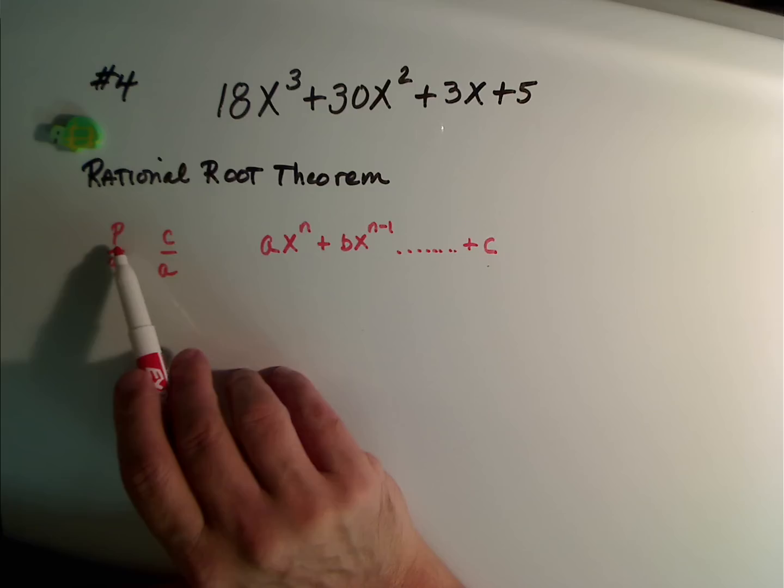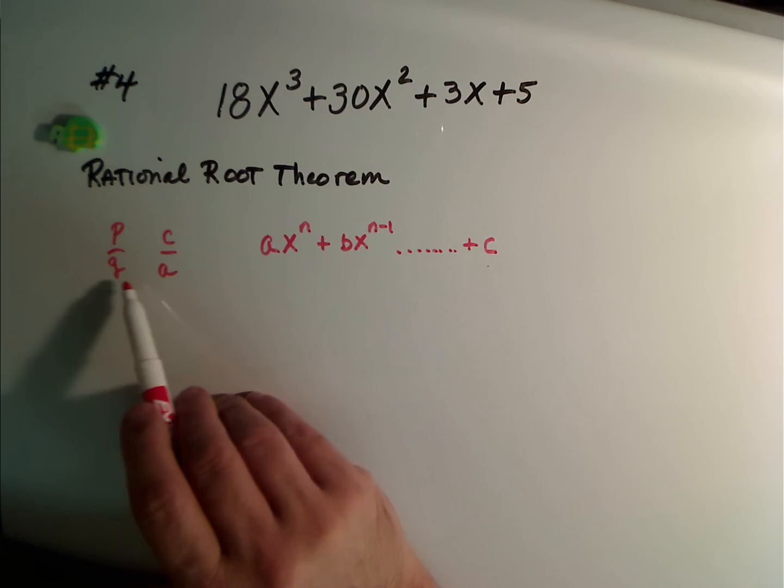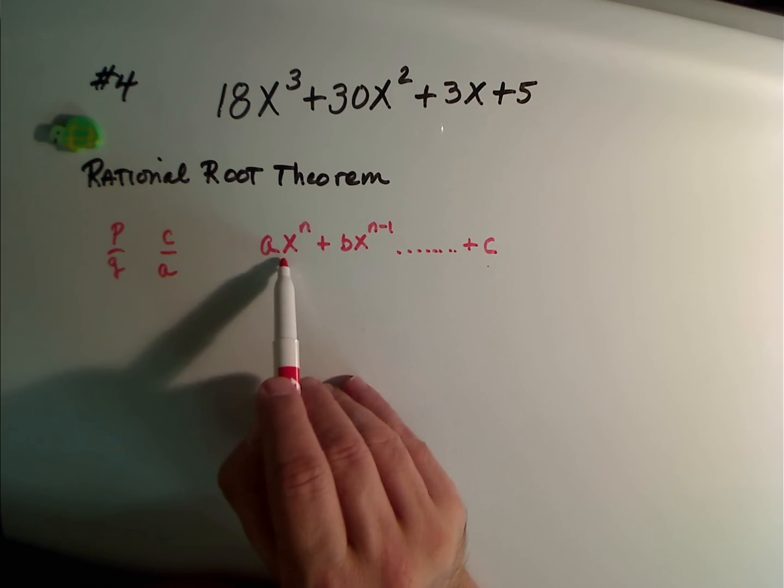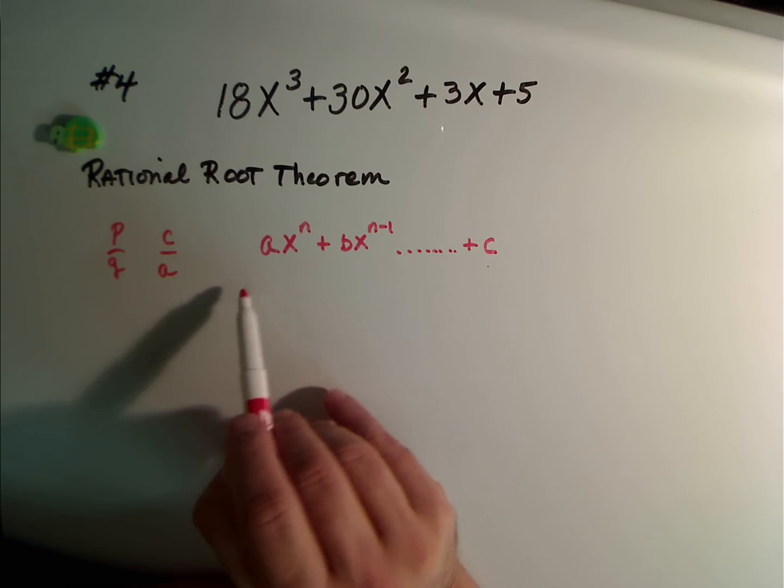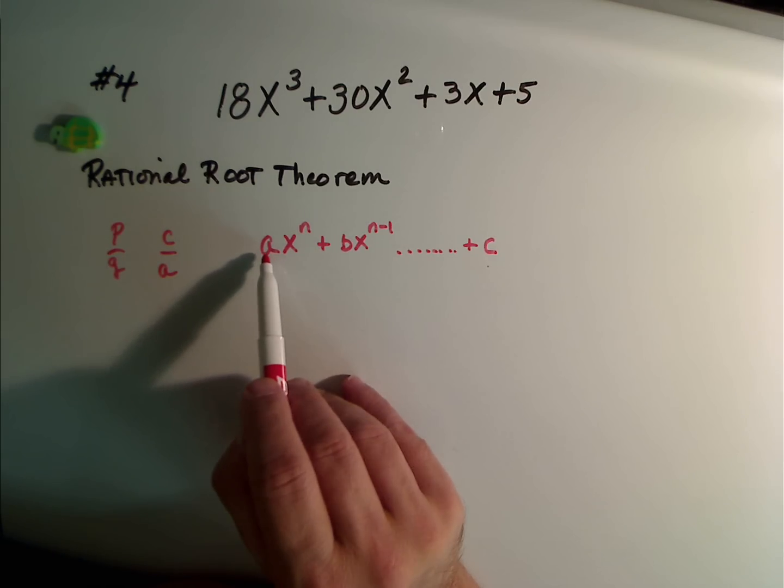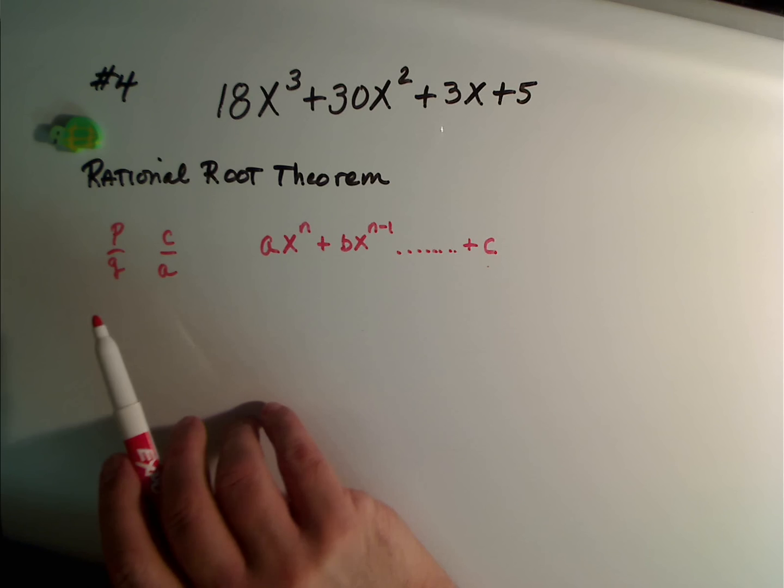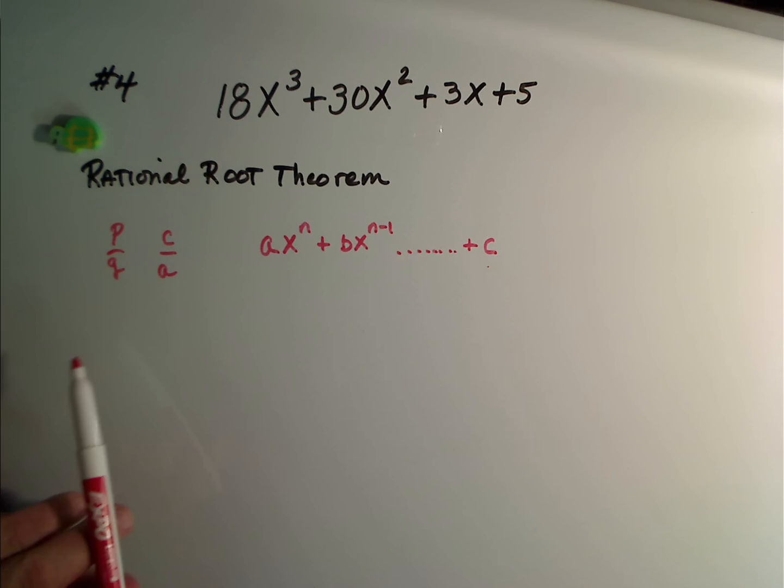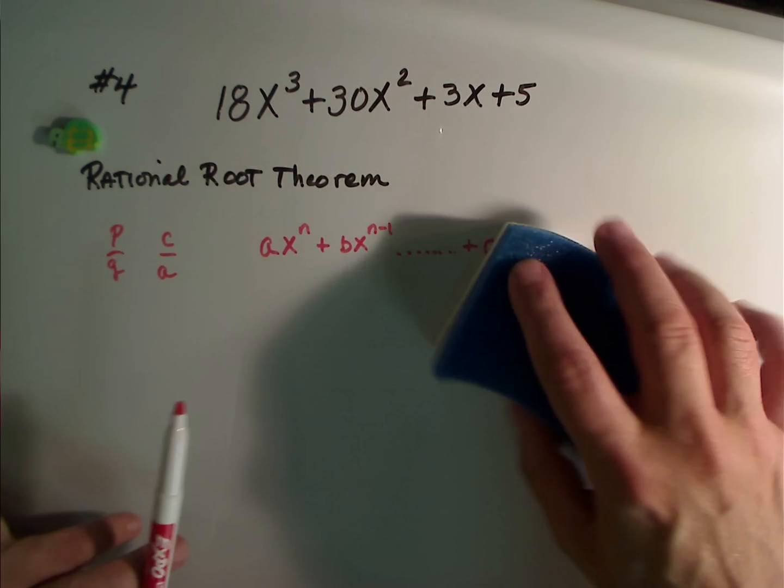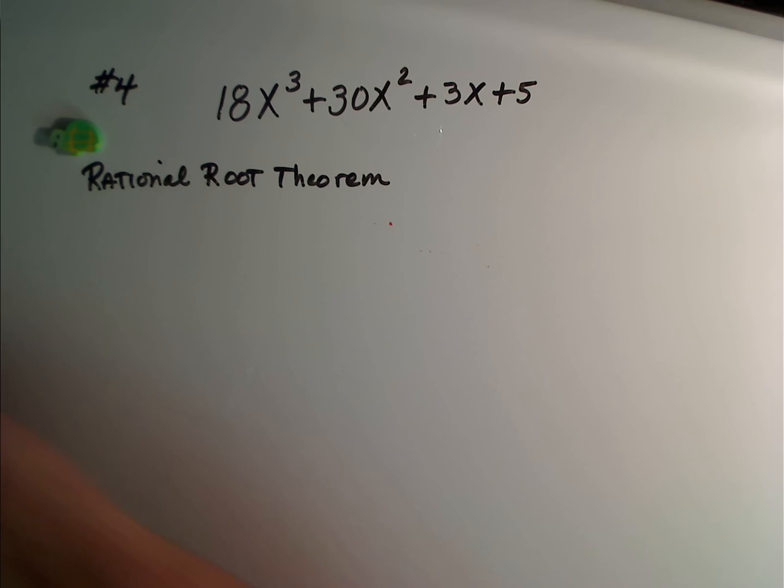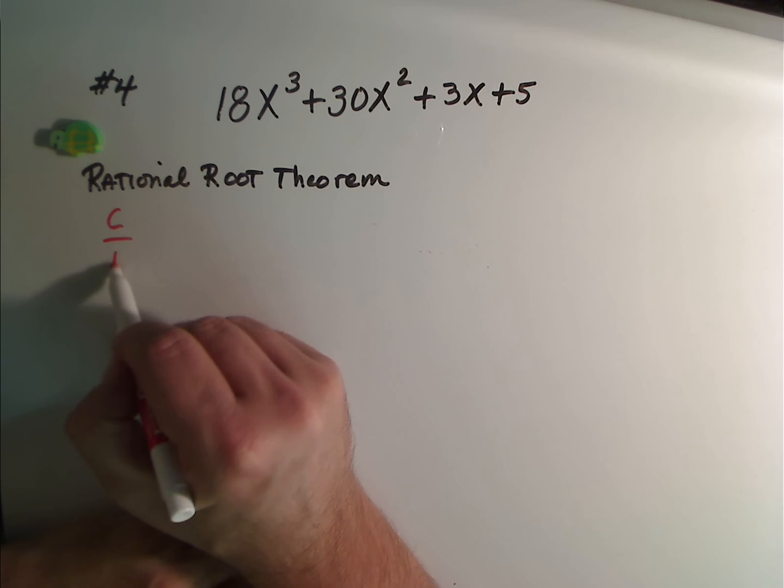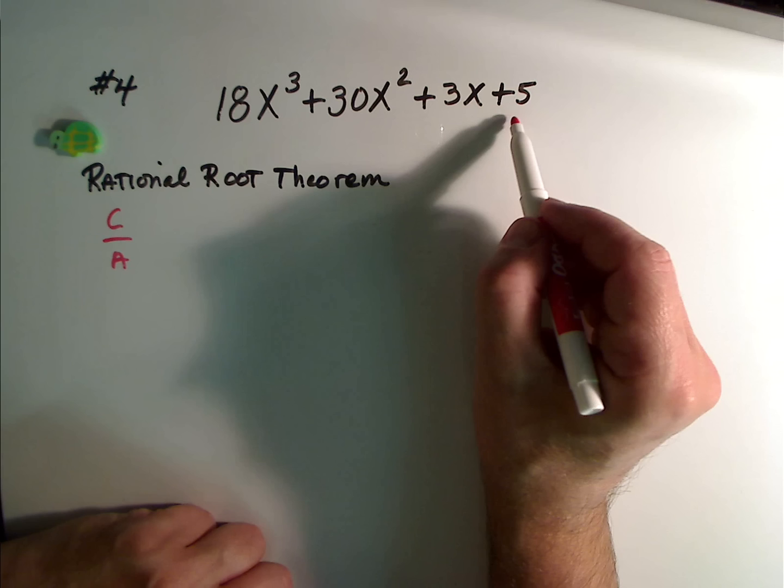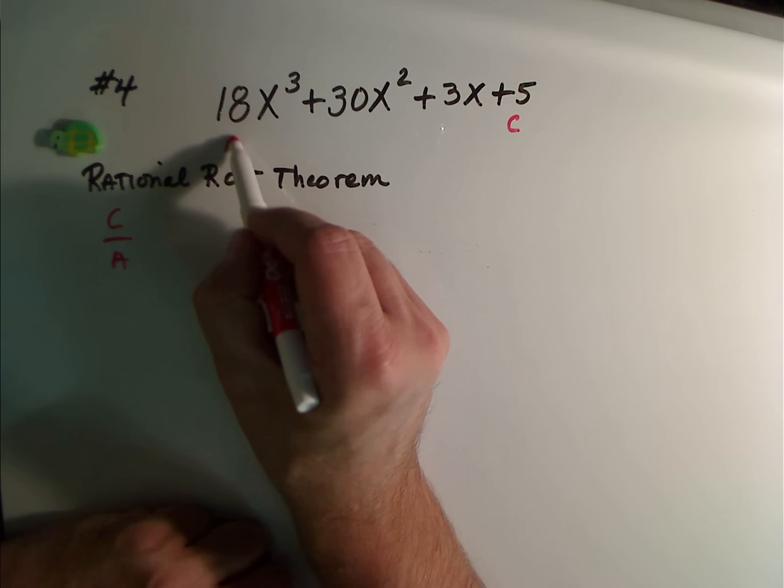So P means the constant and Q means the coefficient of the largest exponent. Let's do this. C over A is how I like to do it. This would be my C and this would be my A.